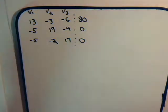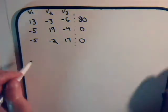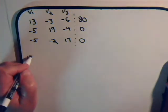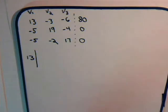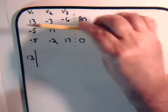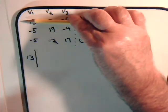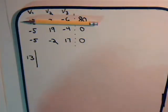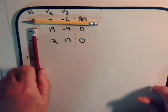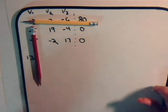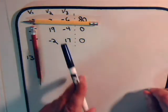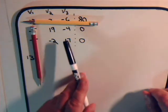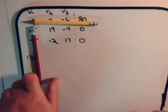Here we have, expanding by minors, we're going to have thirteen times this sub-determinant, which is a two by two determinant. We determine it by covering up the row that thirteen appears in and the column, to leave us with this two by two sub-determinant of nineteen, negative two, negative four, seventeen.